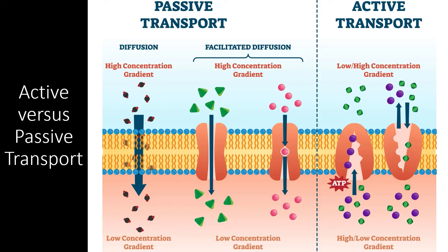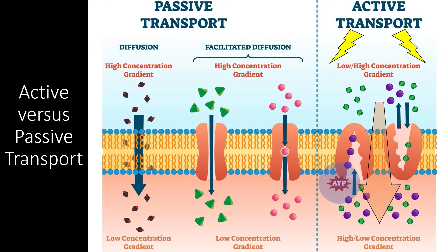The difference between active transport and passive transport is simple: active transport requires energy. Active transport can get this energy from ATP, or it can utilize the potential energy stored in a concentration gradient. Active transport requires energy because it is moving a substance against the concentration gradient — in other words, the molecules are moving from an area of low concentration to an area of high concentration.